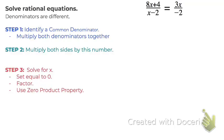Here we're going to solve this rational equation. Our first step is to identify a common denominator. It doesn't have to be the least common denominator, it just needs to be a denominator that they could have in common.